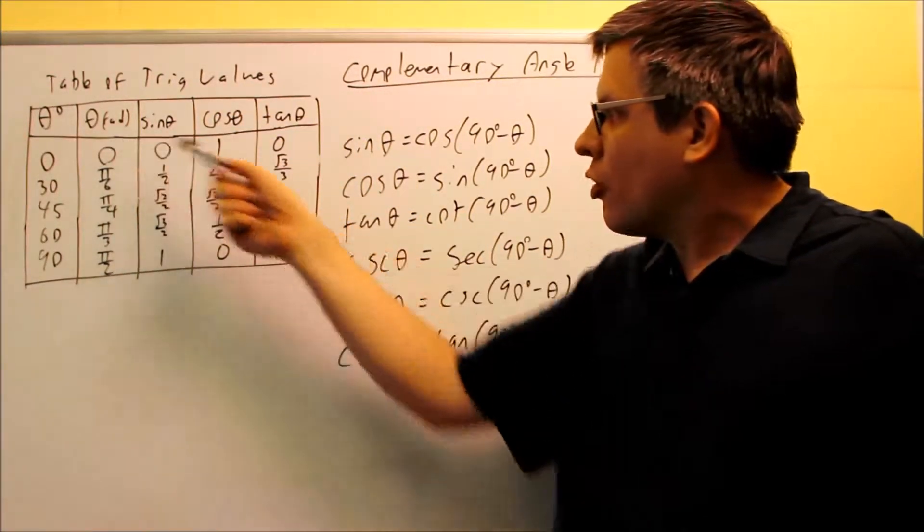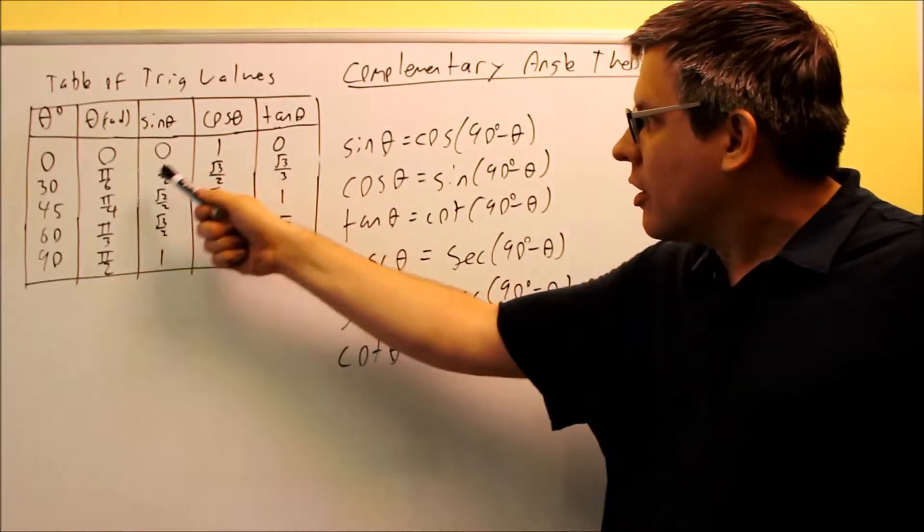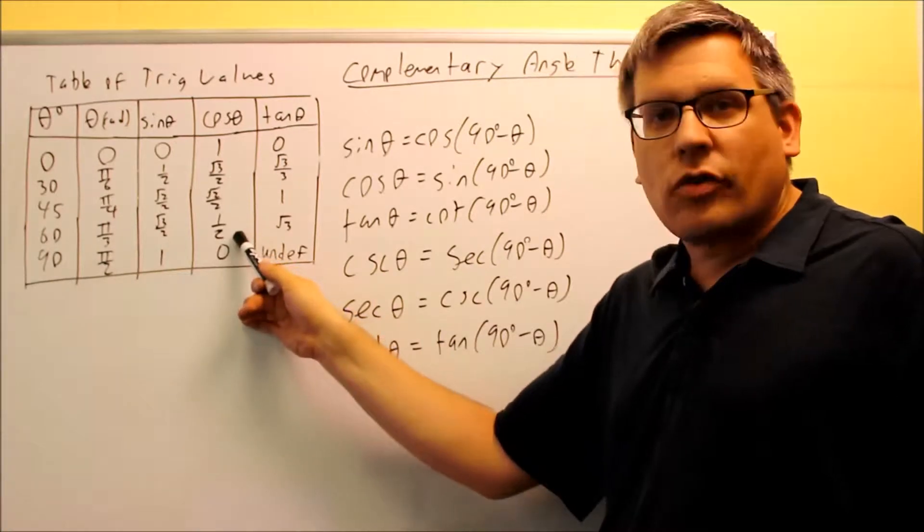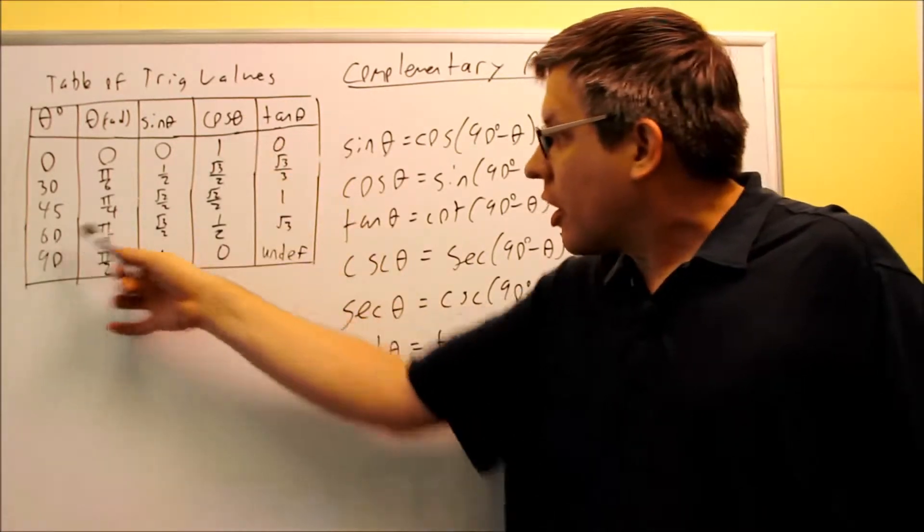If you look at corresponding values at the table, like here, I have sine 30 degrees is one half, but I have one half down over here also, that would be cosine 60.